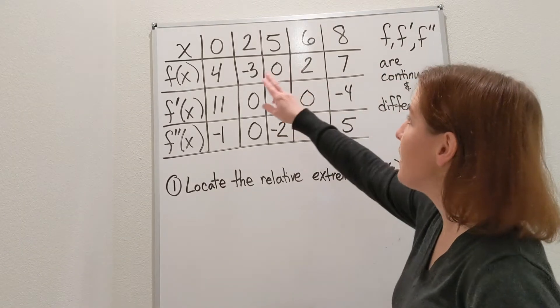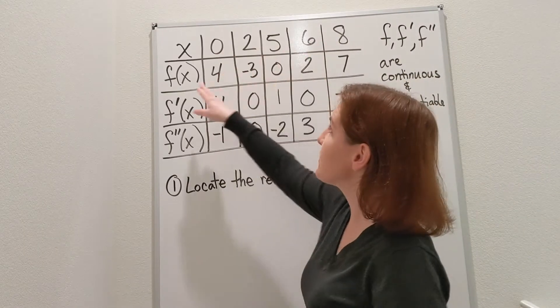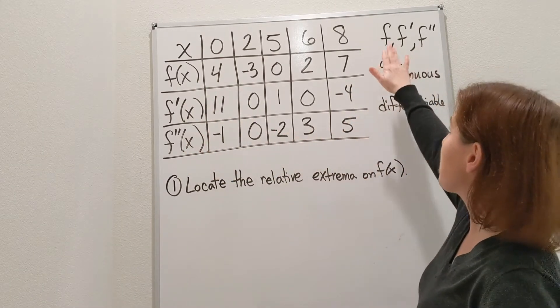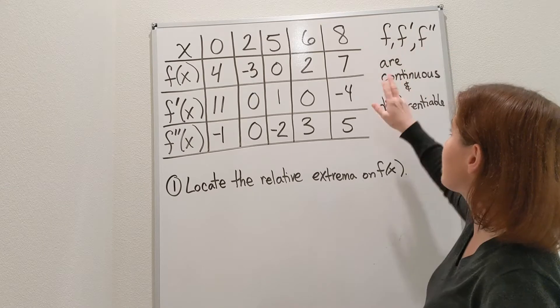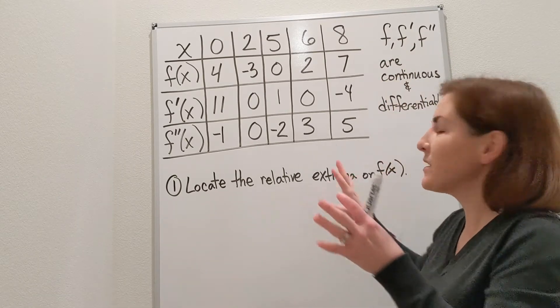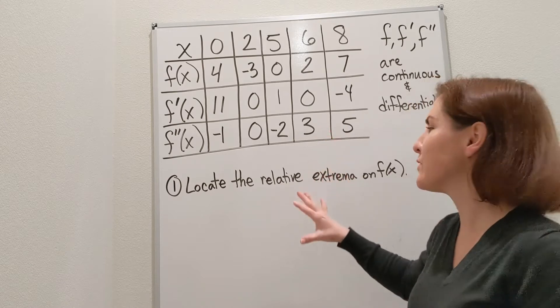I have this table of values with x values and values of the function, its first derivative, and its second derivative. I know that the function, the first derivative, and the second derivative are continuous and differentiable. I'm going to do a lot of different problems with this information.